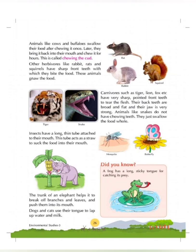You must have seen cows and buffalo sitting in shade and chewing something for hours. These animals first swallow their food and then bring this partially digested food over and over again into their mouth and chew it for hours before finally swallowing it. This partially digested food which they keep on chewing for hours is known as the cud. Other herbivores like rabbit, rats and squirrels have sharp front teeth with which they bite the food. These animals gnaw the food.